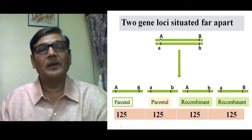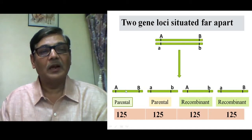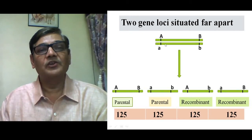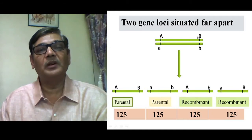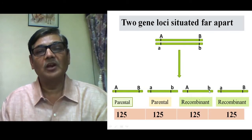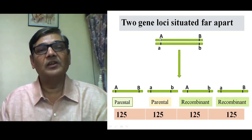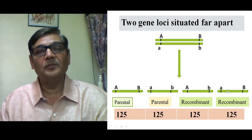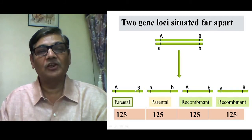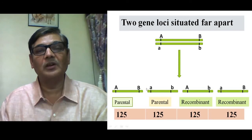The four gamete types are: capital A capital B and small a small b (parental types), and capital A small b and small a capital B (recombinant types). Since there is enough distance between A and B, we expect all four types to be in equal proportion — 25% each. If we analyze 500 cases, we would get 125 of each type. This situation holds only when two genes are located far apart.